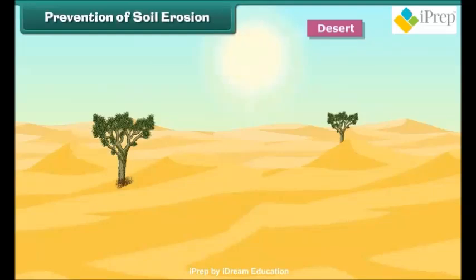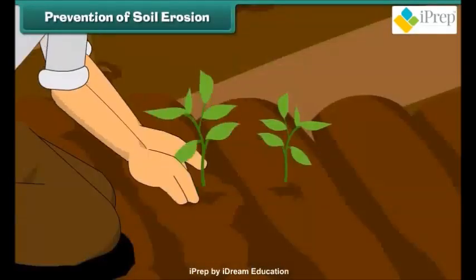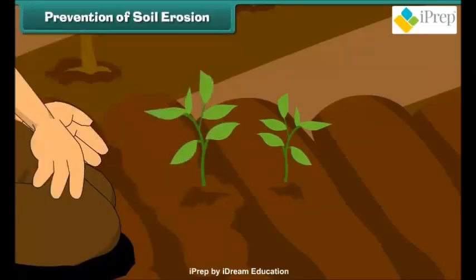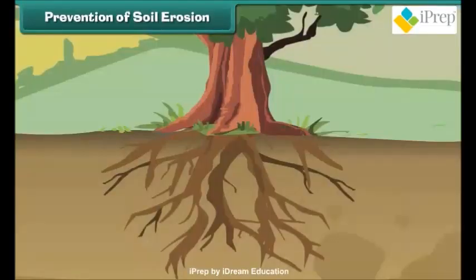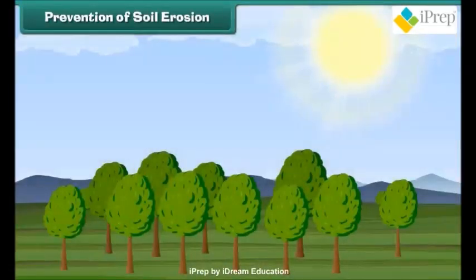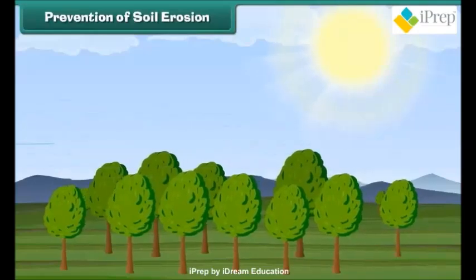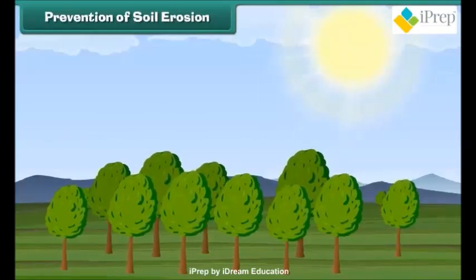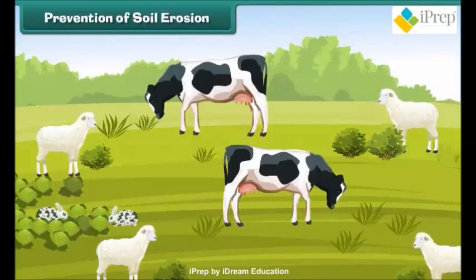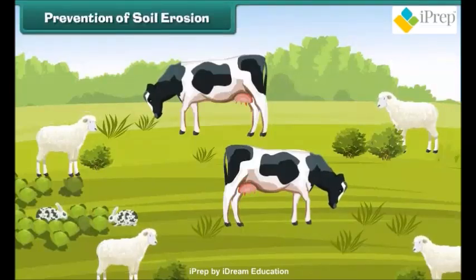There are many ways of preventing soil erosion. One of the most common ways is to grow more and more trees. The roots of trees hold the soil firmly and do not allow it to wash away easily. Trees planted across the wind direction also protect soil against high-velocity winds.